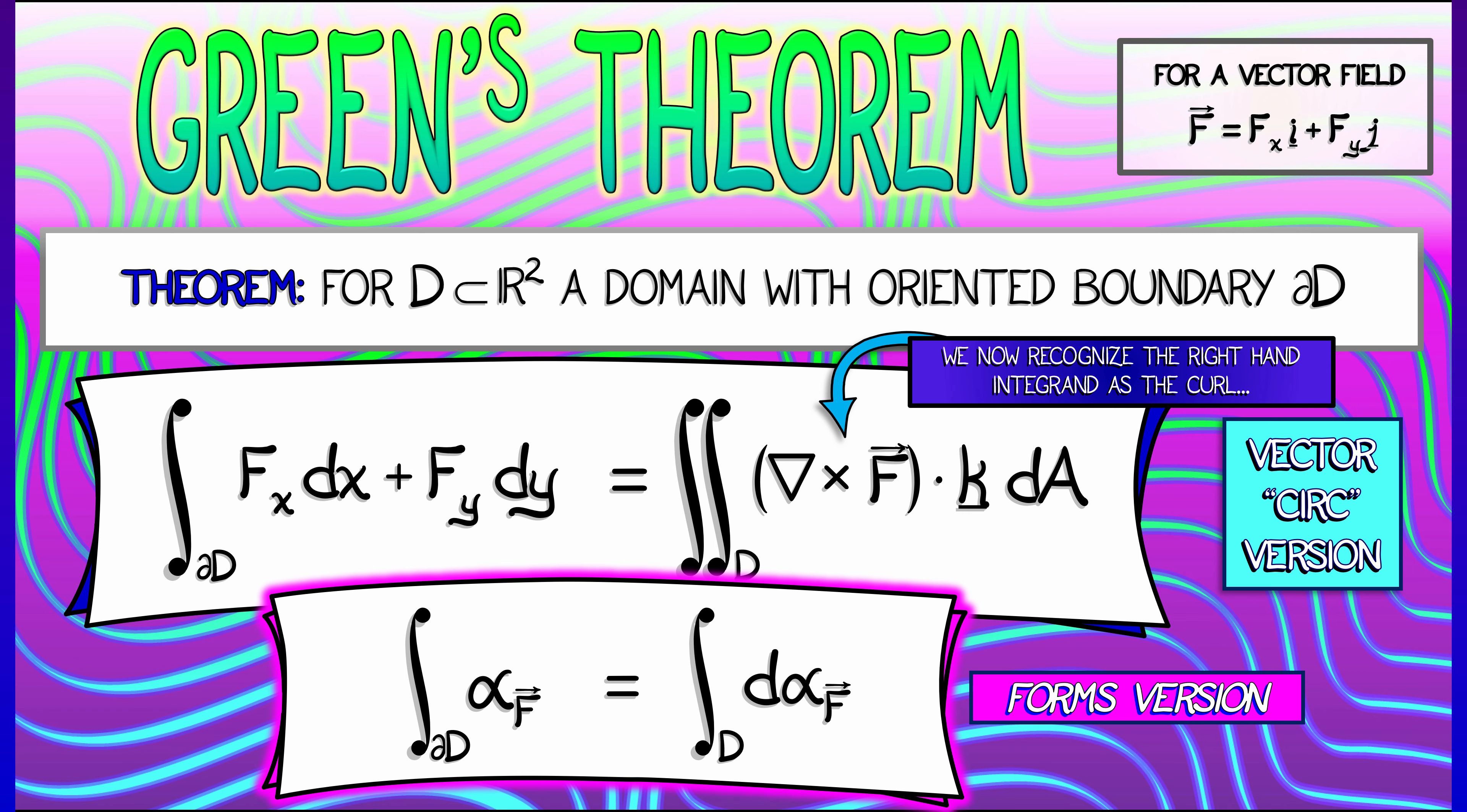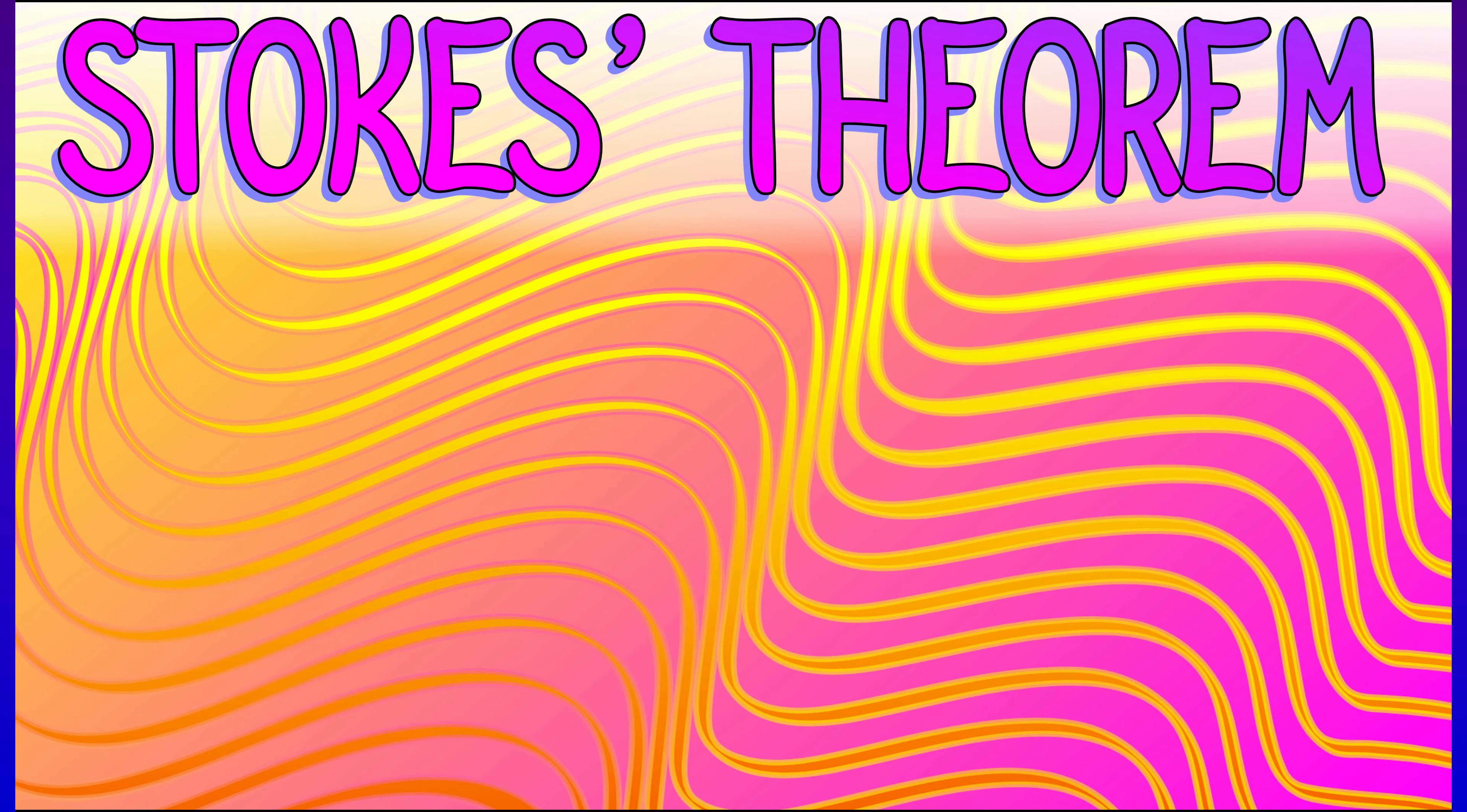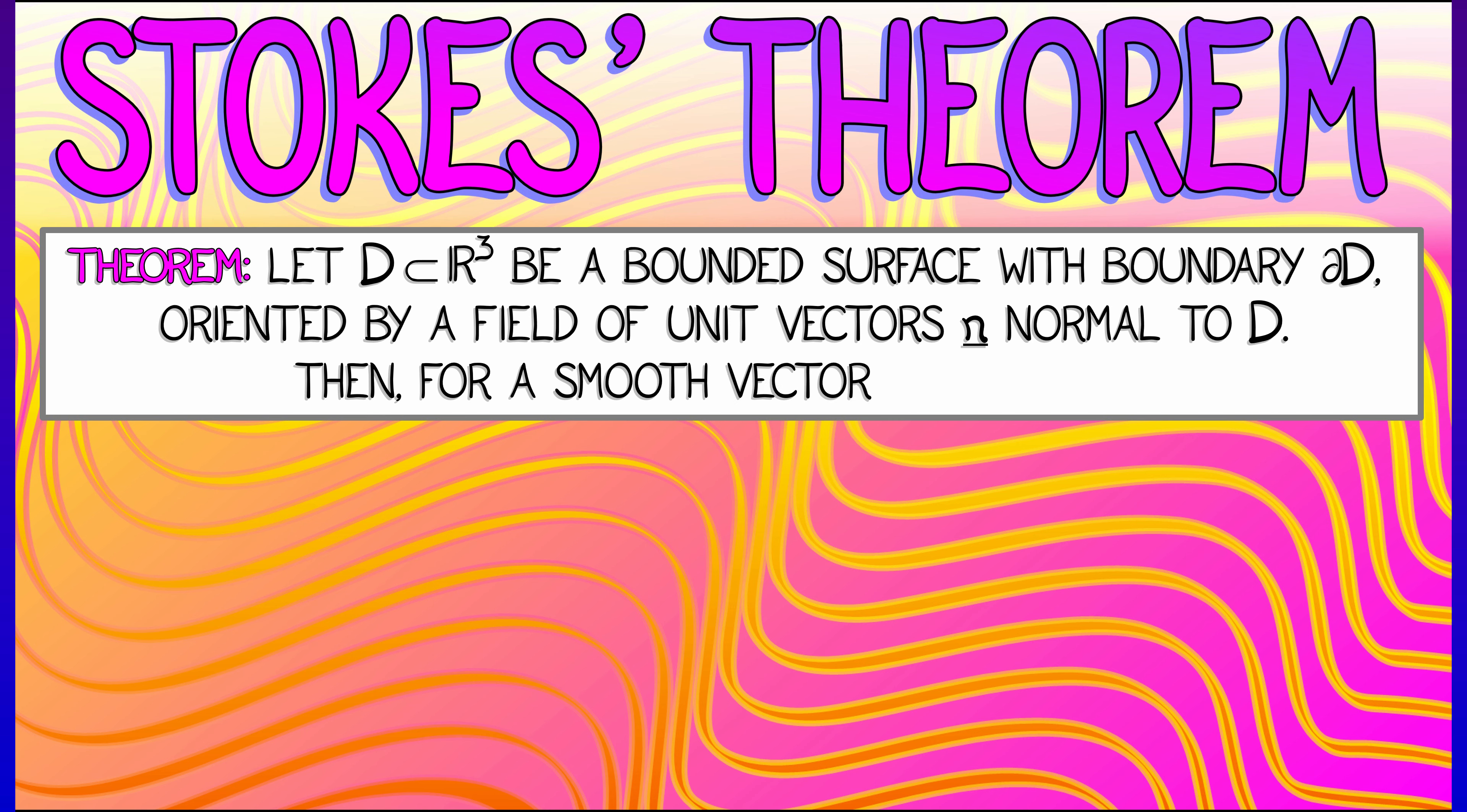Now that form of Green's theorem can be generalized to 3D, and the way that we have written it out tells us exactly what to do. It is called Stokes theorem, and it says that if you have some domain D that is a surface in 3D with a boundary, we have to worry about orientations. So we're going to orient this surface by a field of unit normal vectors that are everywhere orthogonal to D, and we're going to get an induced orientation on the boundary.